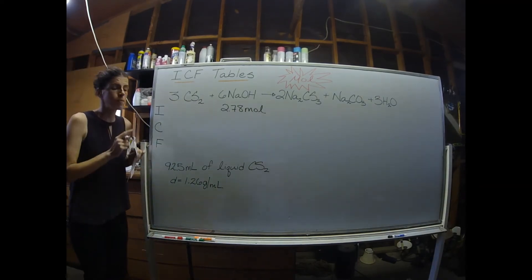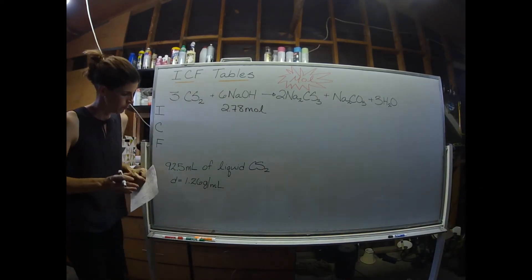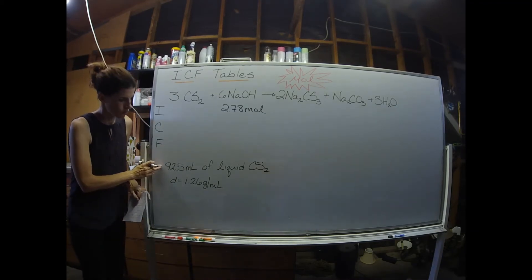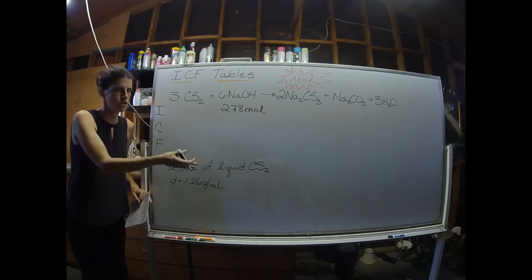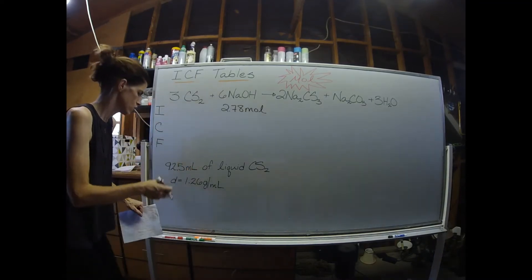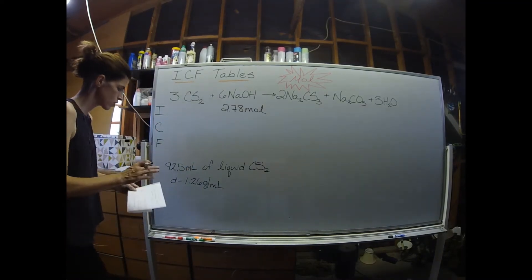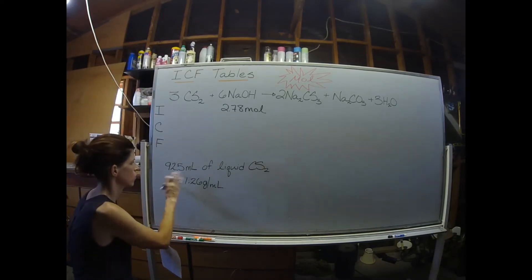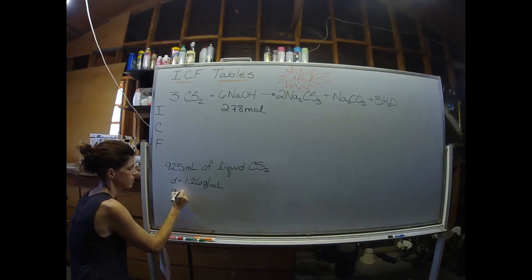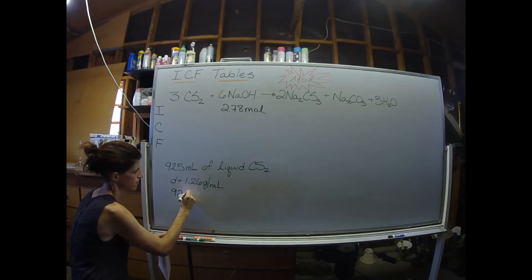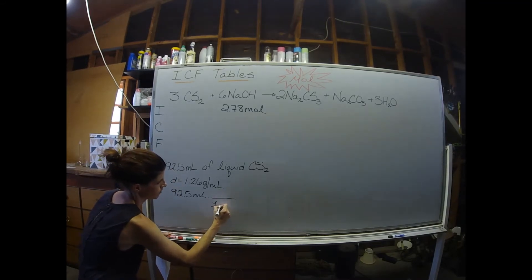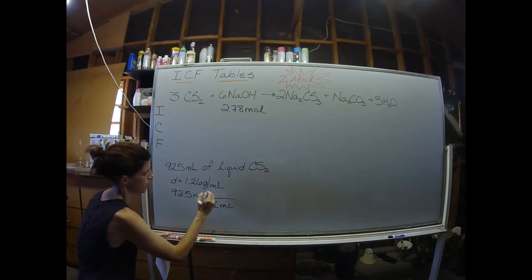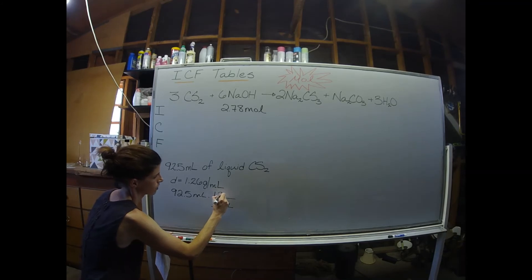For the carbon disulfide, it's a liquid and they gave us a volume and a density. So I cannot plug either one of these values into here. I need to get it turned into moles. So let's go ahead and do that. We'll start with the 92.5 mils. And I'm just going to use my density as a conversion factor here. So I'll say one mil of the carbon disulfide has 1.26 grams.